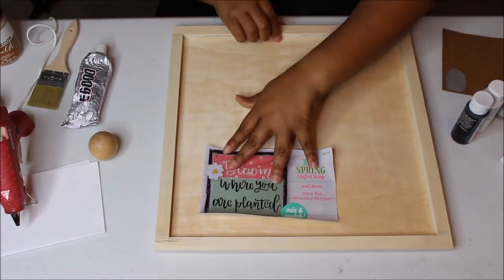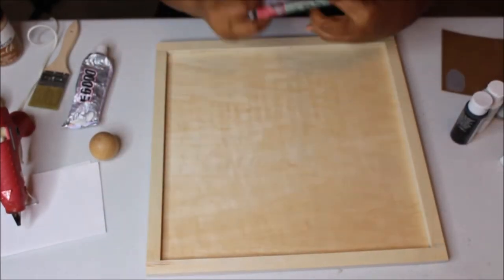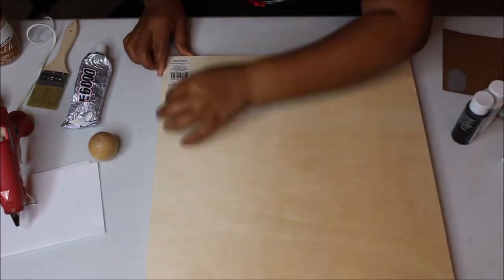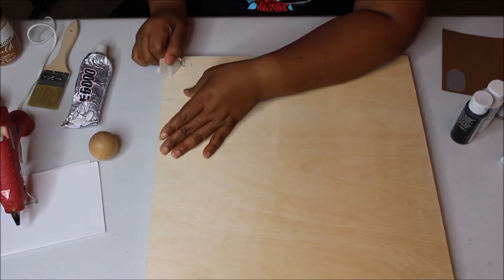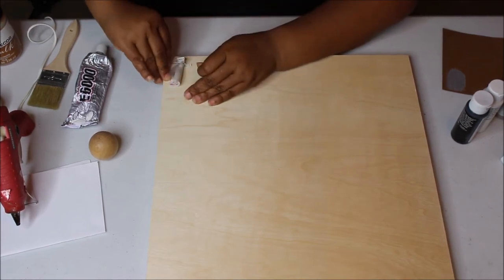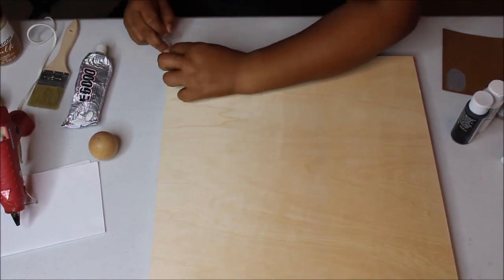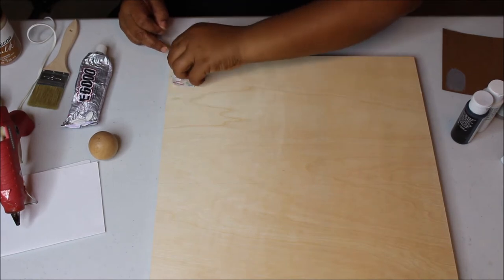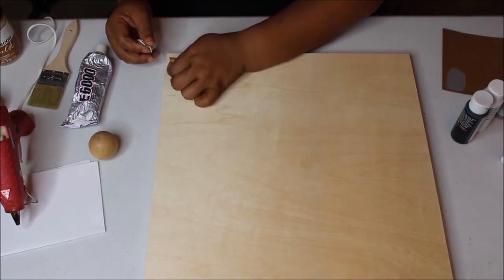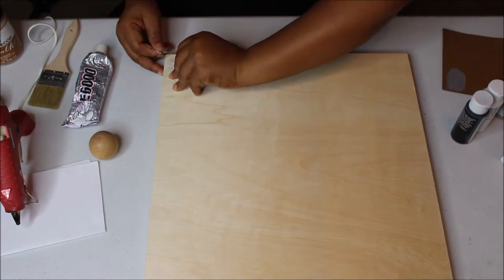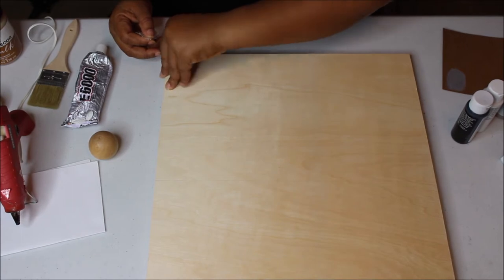What I used to make this tray was this wooden frame or plaque from Joann's. I got this about a year or so ago on clearance from their spring collection. It was originally $14.99 and I think I got it for a couple dollars because it had gone down to like 80% off. I didn't know what I was going to do with it at the time, but since it was just unfinished wood, I figured I'd figure out something down the road. Right here, I'm just taking off the stickers and price tag.